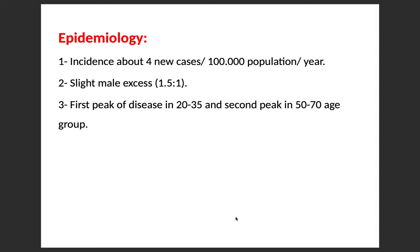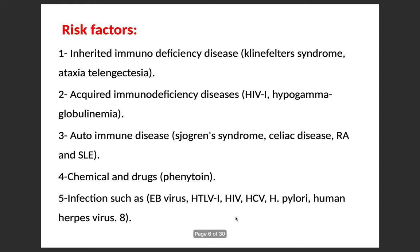Epidemiologically, the incidence is about four new cases per 100,000 population per year, with a slight male excess of 1.5 to 1. There is a first peak of disease in the 20 to 35 age group and a second peak in the 50 to 70 age group, so we have two peaks of the disease.